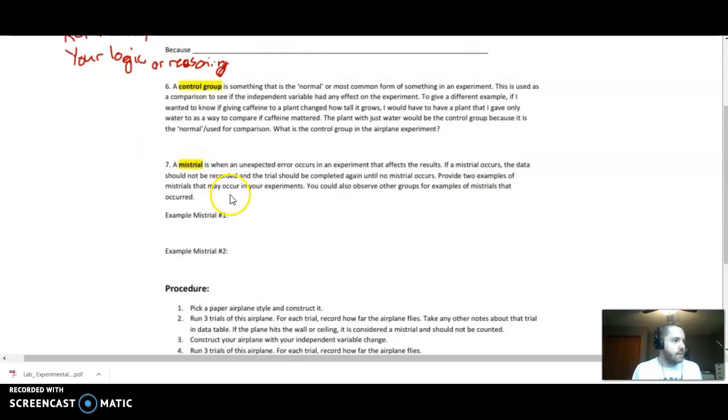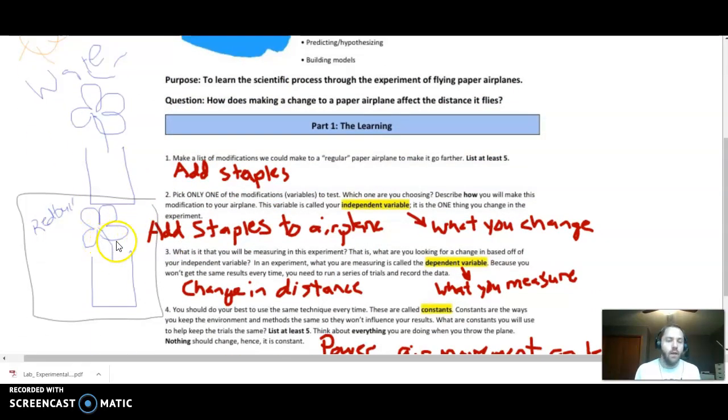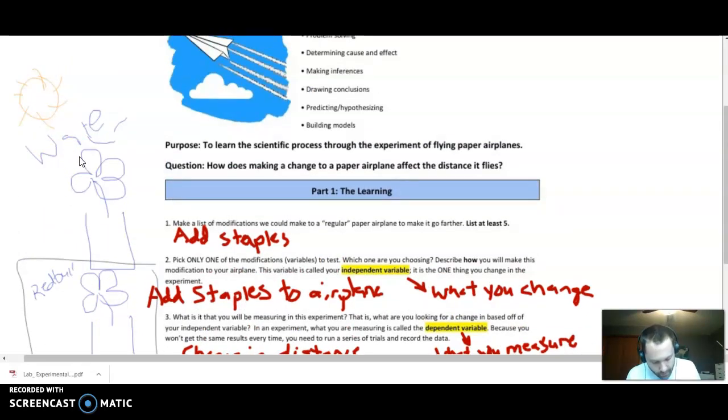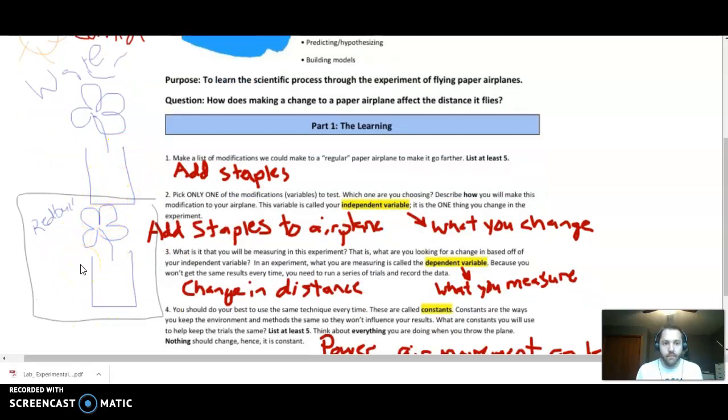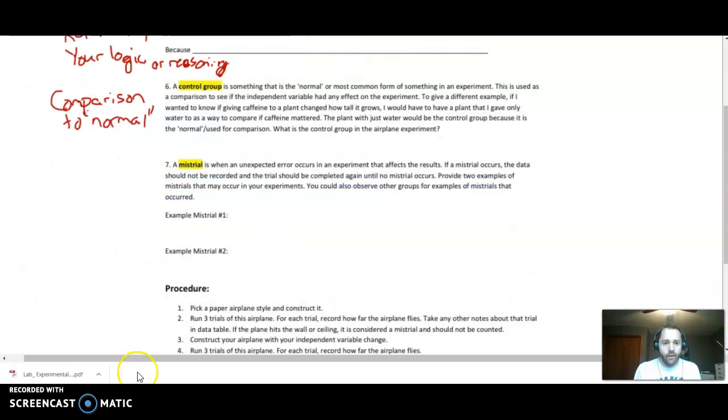Your control group is one of the hardest things for students to understand. Please note that a control group is, the best way I can say it, it's your comparison to normal. So whatever is considered like the normal thing. Going back to this plant example. Well, which one's normal, the one with water and sunlight or the one with Red Bull and shade? Probably the one with sunlight and water, right? The reason that you had to have a plant that you gave water to is because if you had only this one plant with Red Bull, you would have no idea if Red Bull made it grow taller or shorter. You need the one that's normal, the one that's given water, in order to compare your results, too. Thinking about this airplane activity. Well, what's going to be my normal? My just regular folded paper airplane or the one that I'm going to load up with staples? I'm going to let you figure that out.